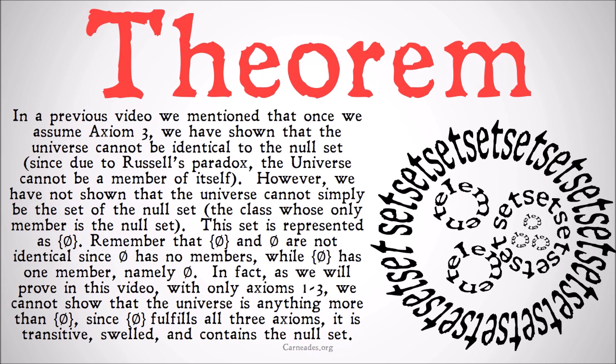Due to Russell's paradox, the universe can't be a member of itself, and the null set is a member of the universe. However, we have not shown that the universe cannot simply be the set of the null set — the class whose only member is the null set. In fact, as we will prove in this video with only axioms one through three, we cannot show that the universe is anything more than the class of the null set.